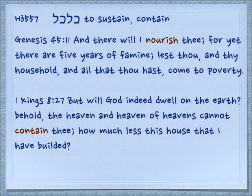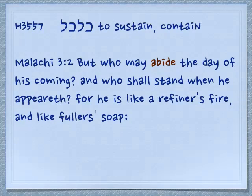Genesis 45:11: 'And there will I nourish thee, for yet there are five years of famine, lest thou and thy household and all that thou hast come to poverty.' 1 Kings 8:27: 'But will God indeed dwell on the earth? Behold the heaven and the heavens of heavens cannot contain thee' — the completeness of God cannot fit in anywhere — 'how much less this house that I have built.' Malachi 3:2: 'But who may abide the day of his coming? Who can be sustained in the midst of it? For he is like a refiner's fire and like a fuller's soap.'